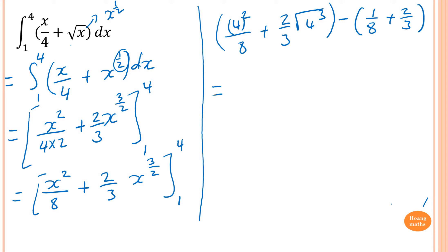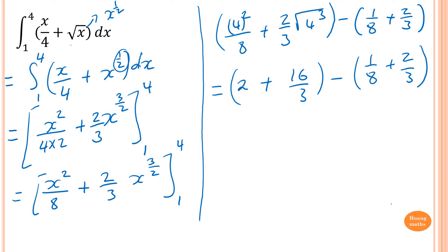Now I work that out. 4 squared is 16, over 8 equals 2. Square root of 4 is 2, 2 cubed is 8, times 2 over 3 gives 16 over 3. So we have 2 plus 16 over 3, minus 1 over 8, minus 2 thirds. Typing this into the calculator gives me 6 and 13 over 24.